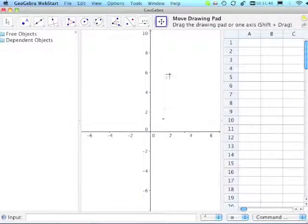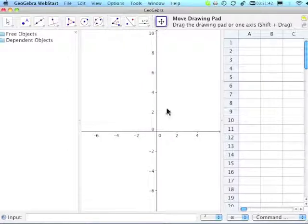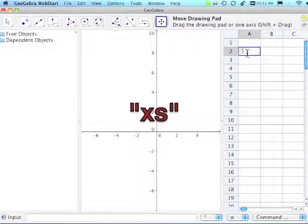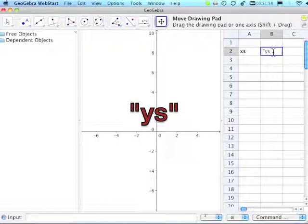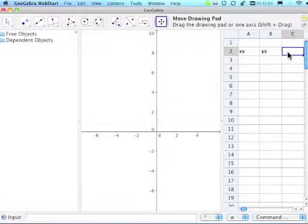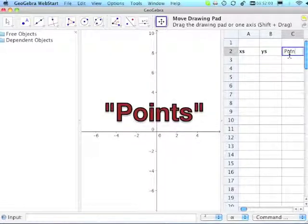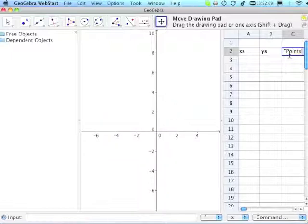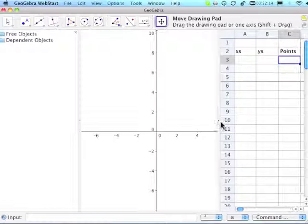I don't need as much of the spreadsheet so I'm going to squeeze that over a little bit. I'm going to enter some labels by using quotes around them. This is going to be my column of X's, this is going to be my column of Y's, and this is going to be my column of points. Notice I'm putting text in quotes so it's not interpreted by GeoGebra as a variable.